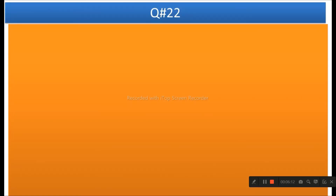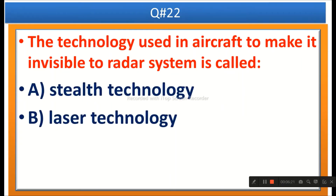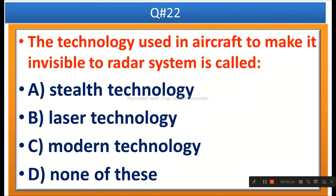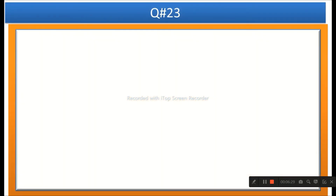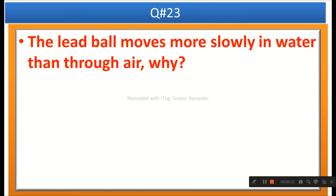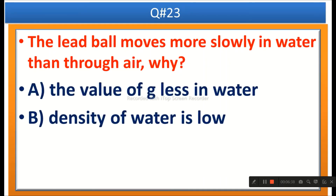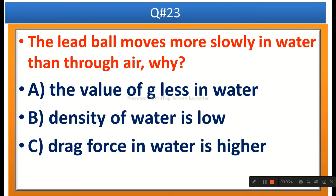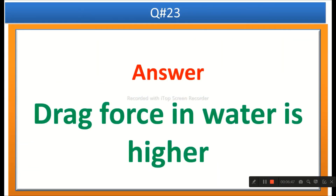The next question: The technology used in aircraft to make it invisible to radar systems is called — options are stealth technology, laser technology, modern technology, or none of these. The right answer is stealth technology. The next question: A lead ball moves more slowly in water than through air — why? Options are the value of G is less in water, density of water is low, or drag force in water is higher. The right answer is drag force in water is higher, because the opposing force is higher, so the particle moves more slowly.